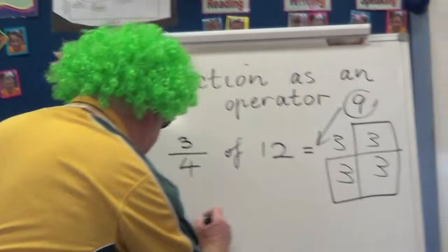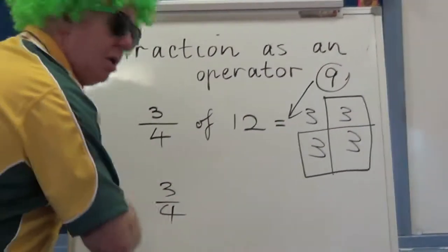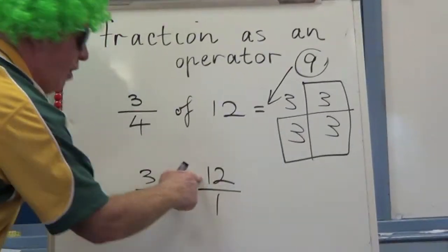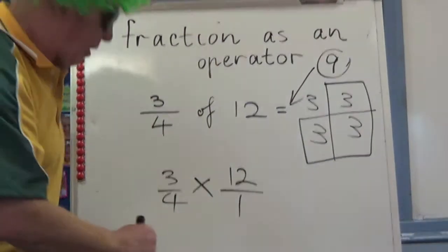Now, just another way of doing it. Three quarters. What does 'of' mean? Multiply. Twelve over one. One into twelve goes? Twelve. Just renaming it.